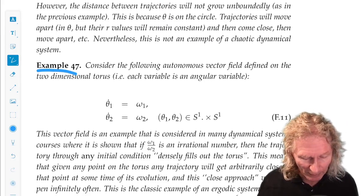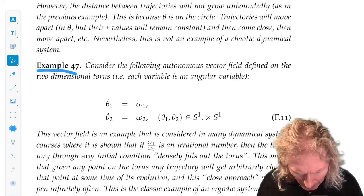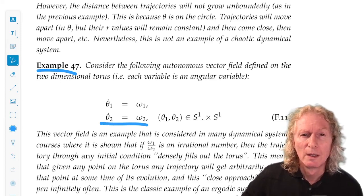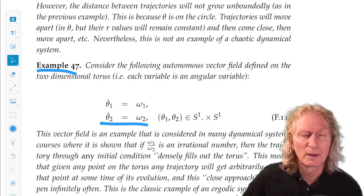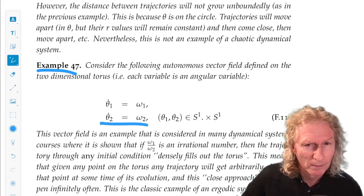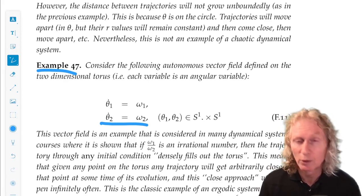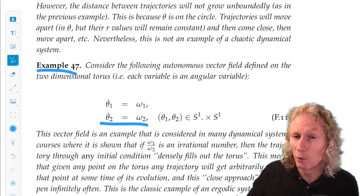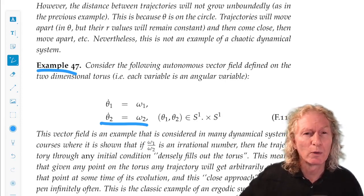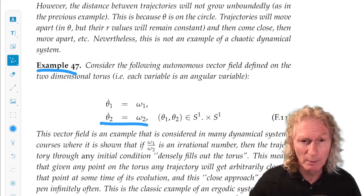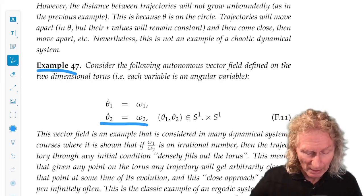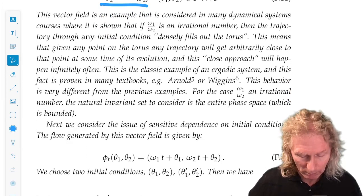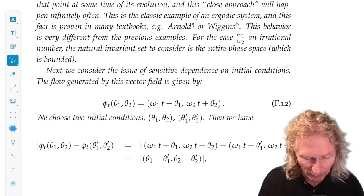Example 47 is a classic example, and I don't quite have the tools for treating this. However, this is an example on the torus S1 cross S1, theta 1 and theta 2 are both angles. This is a classic example. Theta 1 dot is omega 1, theta 2 dot is omega 2. So they both evolve linearly in time on the torus. And the example, which I didn't develop the tools for looking at, so this is the flow.